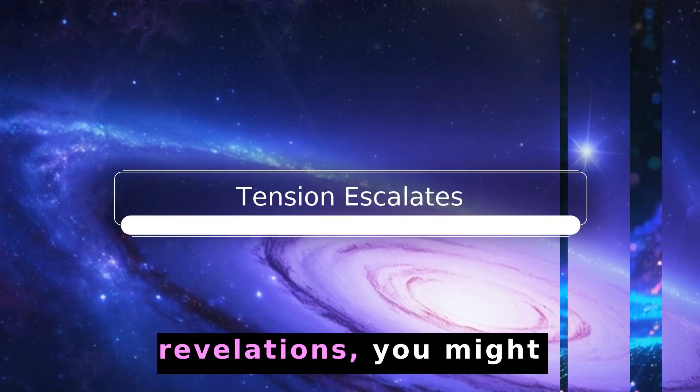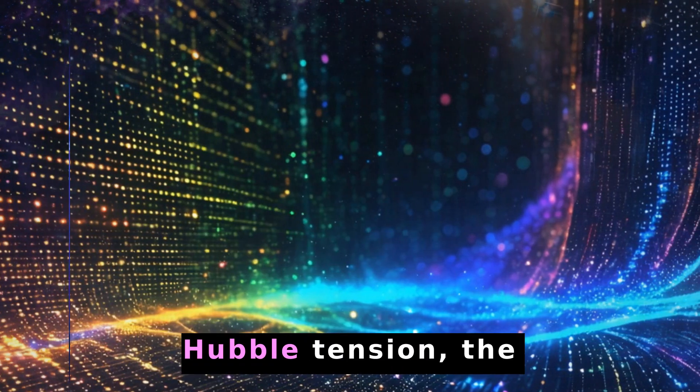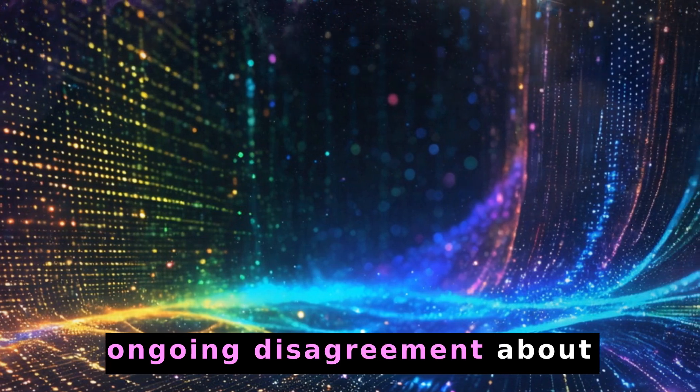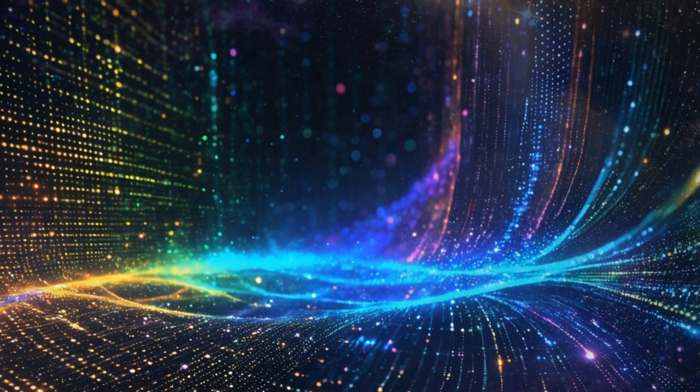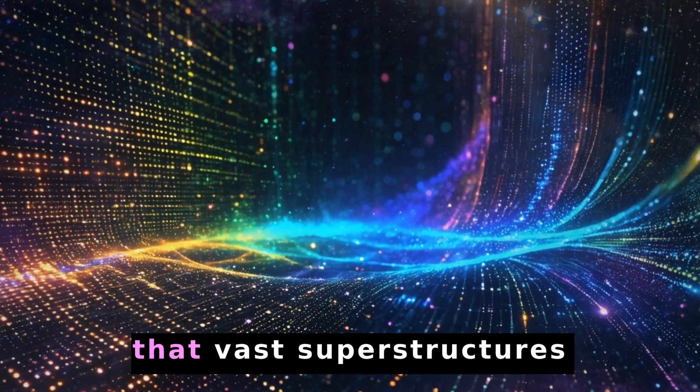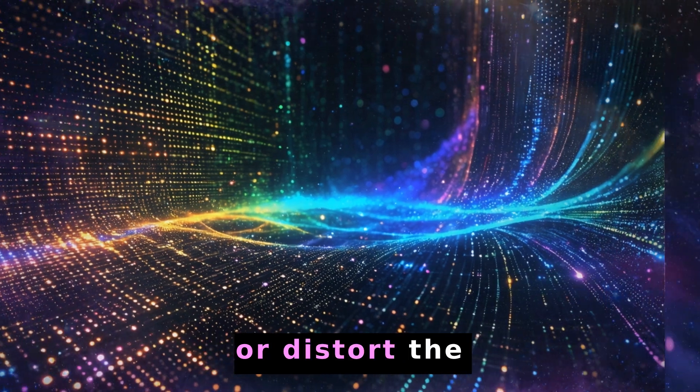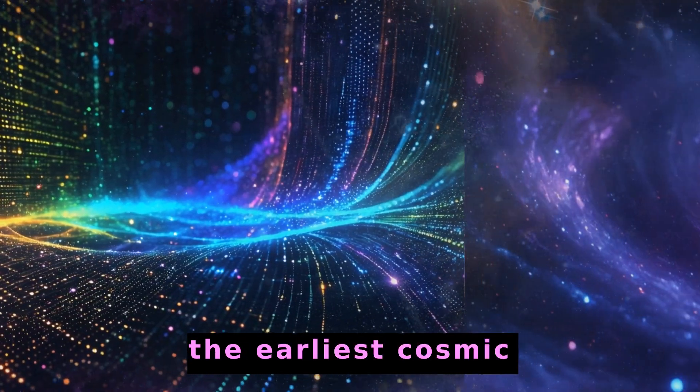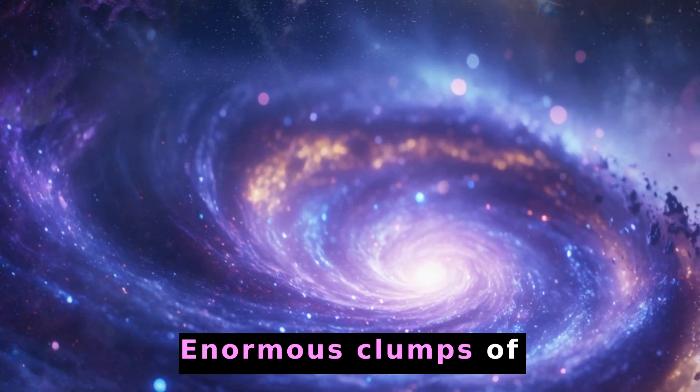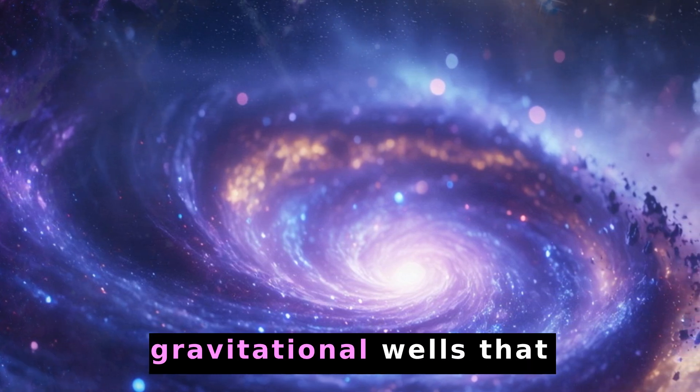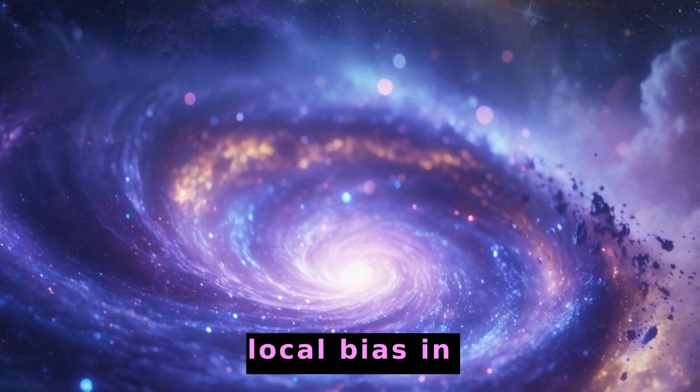Pressed against these revelations, you might wonder, just how does Quipu weigh in on emergent concepts like the Hubble Tension, the ongoing disagreement about the universe's rate of expansion measured via different techniques? Some astrophysicists suspect that vast superstructures like Quipu could subtly skew local measurements or distort the background signals from the earliest cosmic epochs. The logic is straightforward. Enormous clumps of mass create deep gravitational wells that alter redshifts more than we might predict, injecting a local bias in calculations.